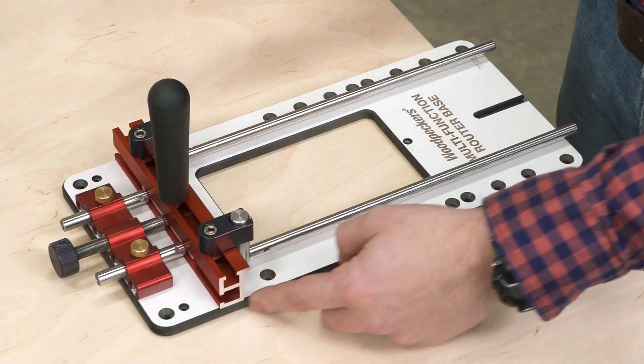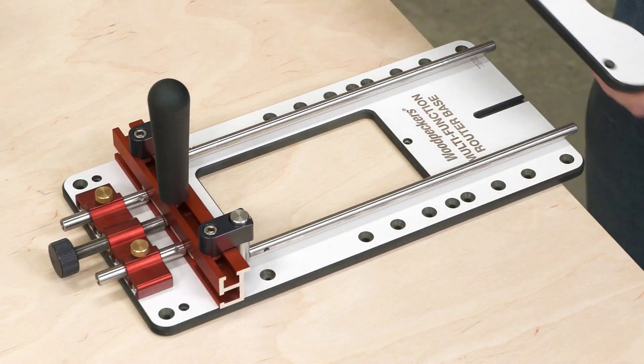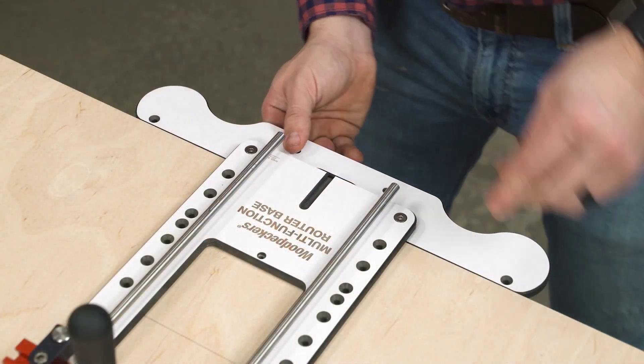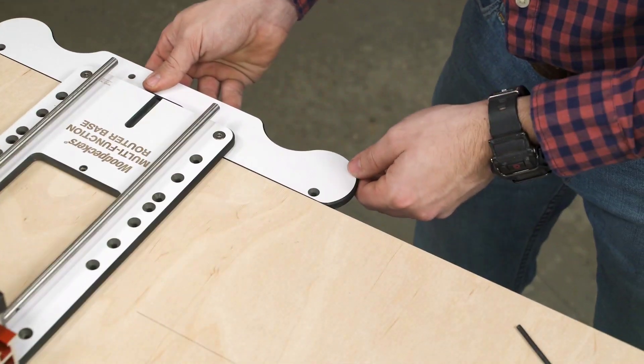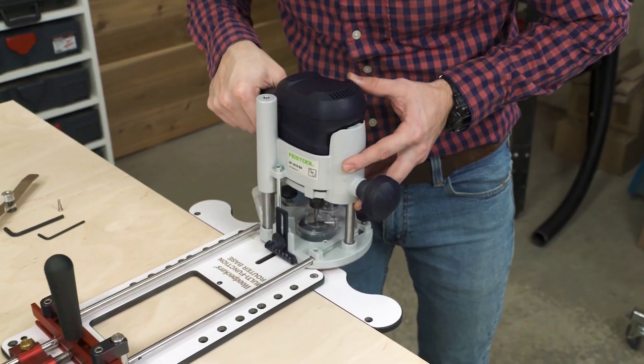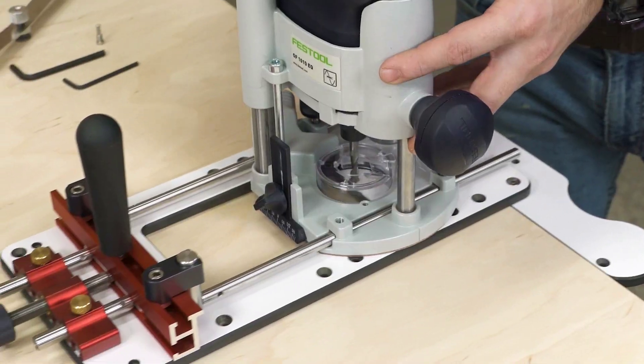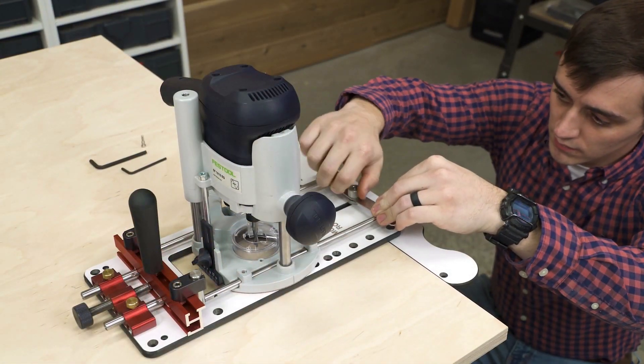It guides your router in precisely straight lines and perfect arcs. Let's look at straight lines first. Install the edge guide in one of ten locations on the base. Slide your router onto the polished stainless steel guide rods and you're ready to route precisely parallel to the edge of your stock.